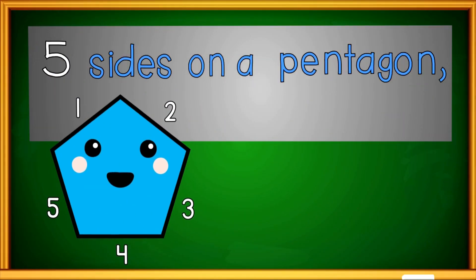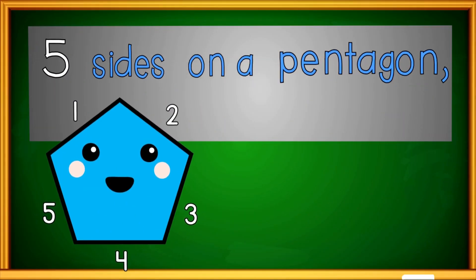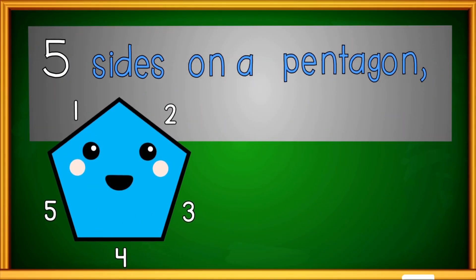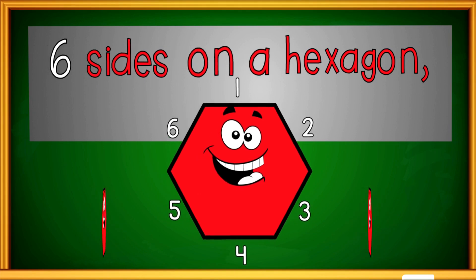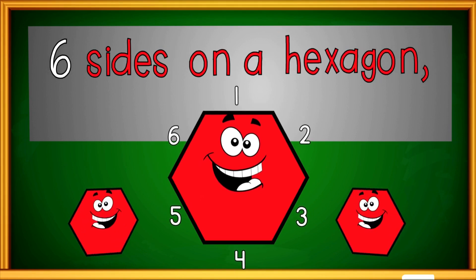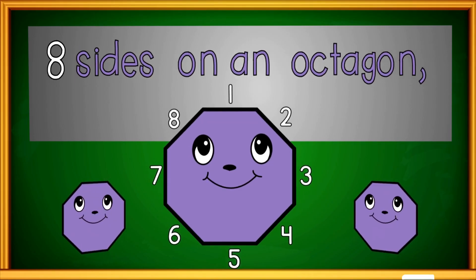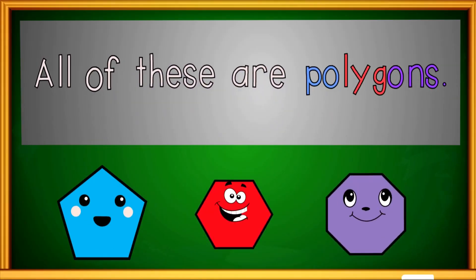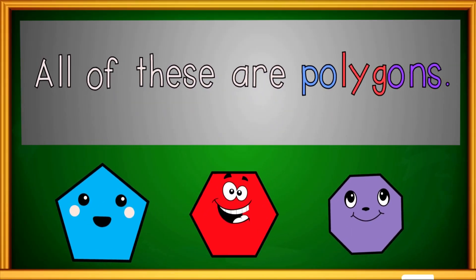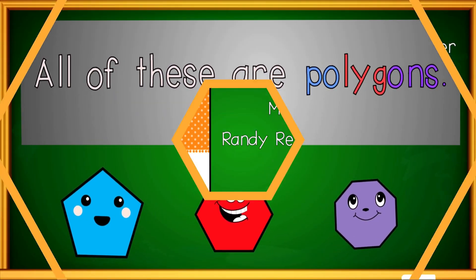There are five sides on a pentagon, six sides on a hexagon, eight sides on an octagon — all of these are polygons.